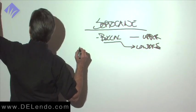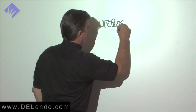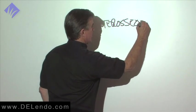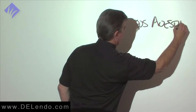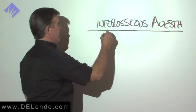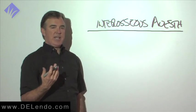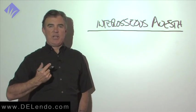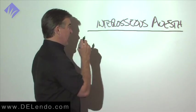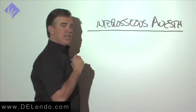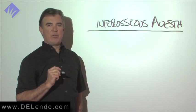Interosseous anesthesia is the silver bullet of endodontic anesthesia. We have all of our techniques, but all techniques fail when conditions become difficult enough, and if you have an interosseous anesthesia kit, then you can get any tooth profoundly numb before you do a root canal.